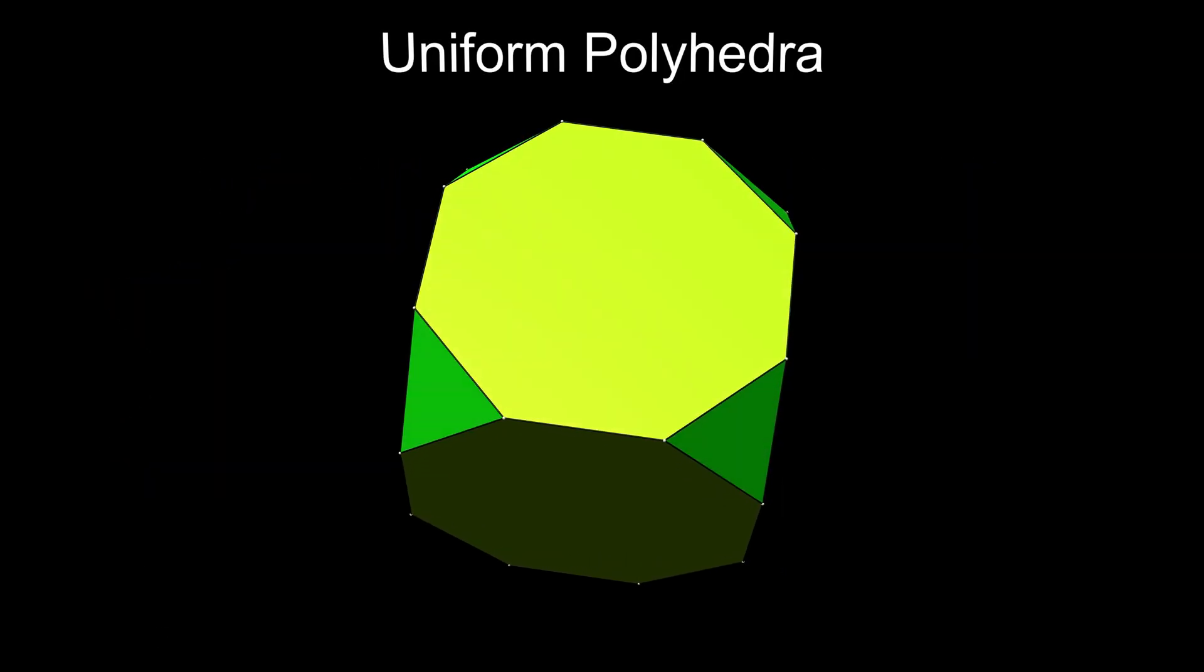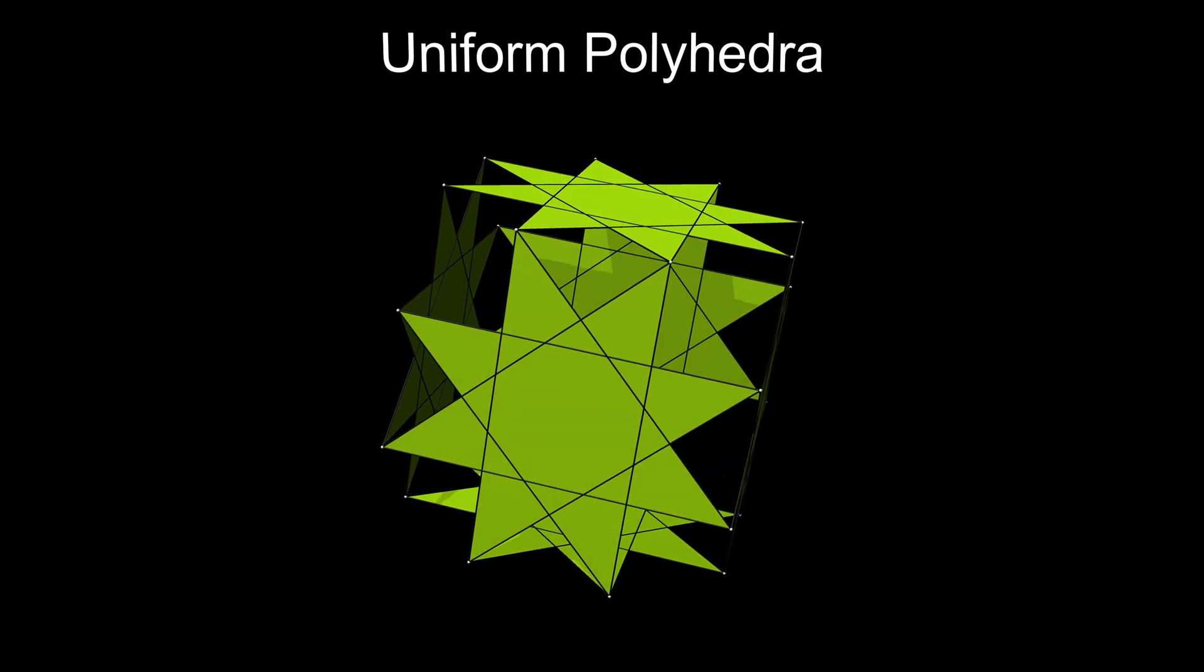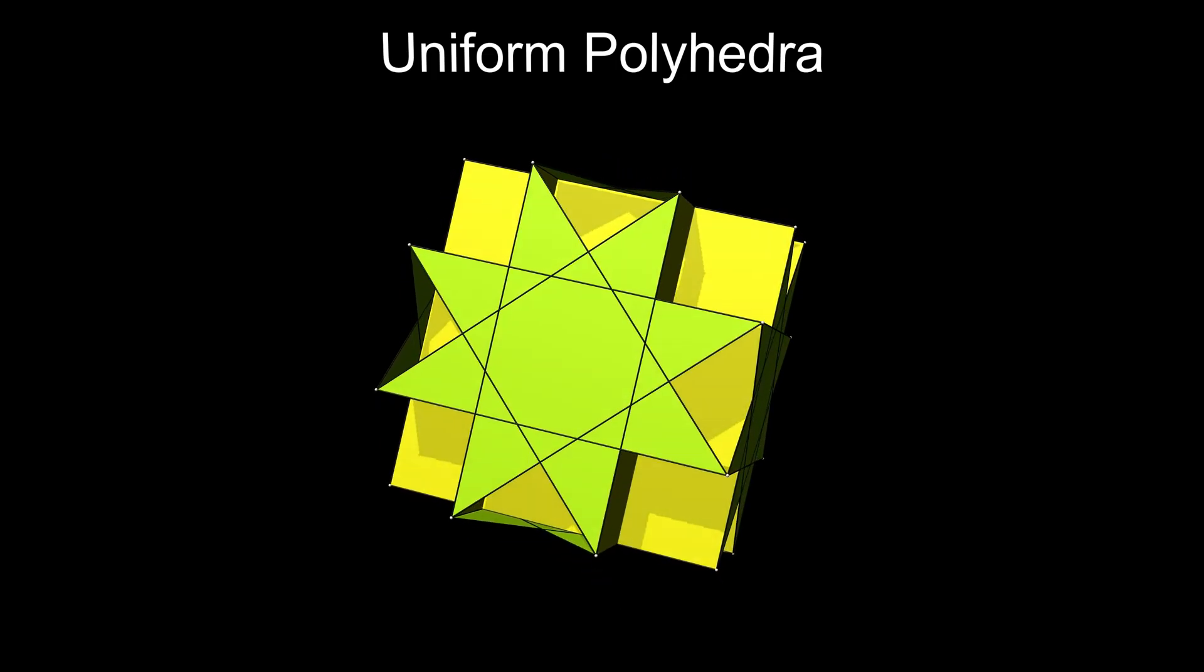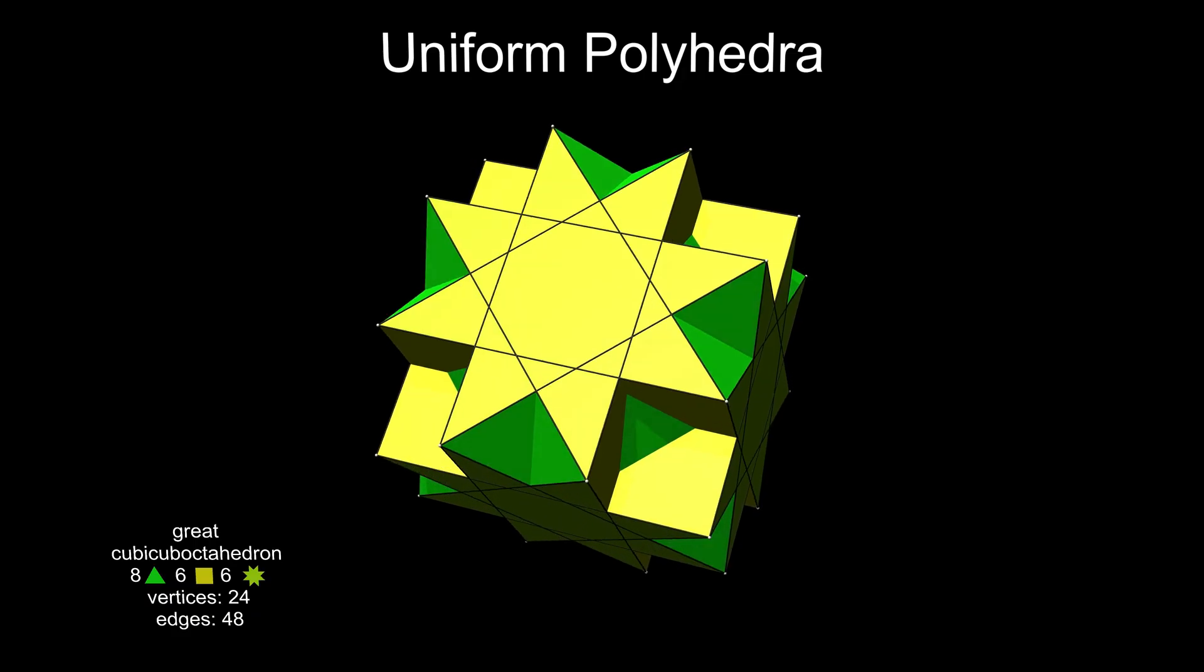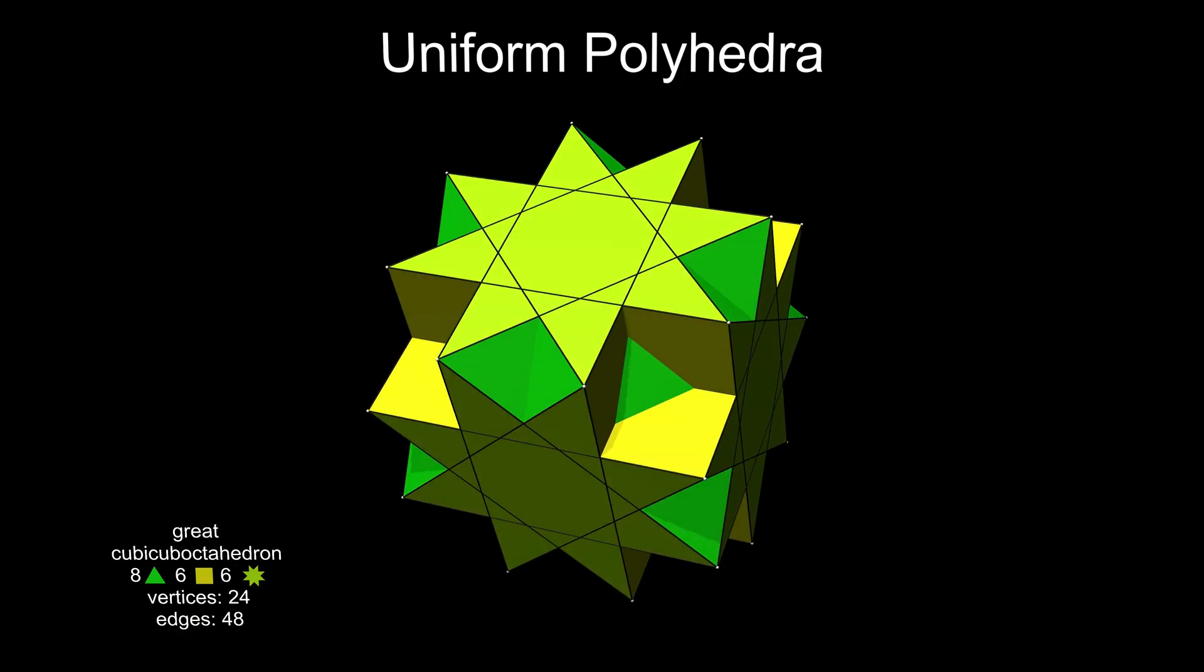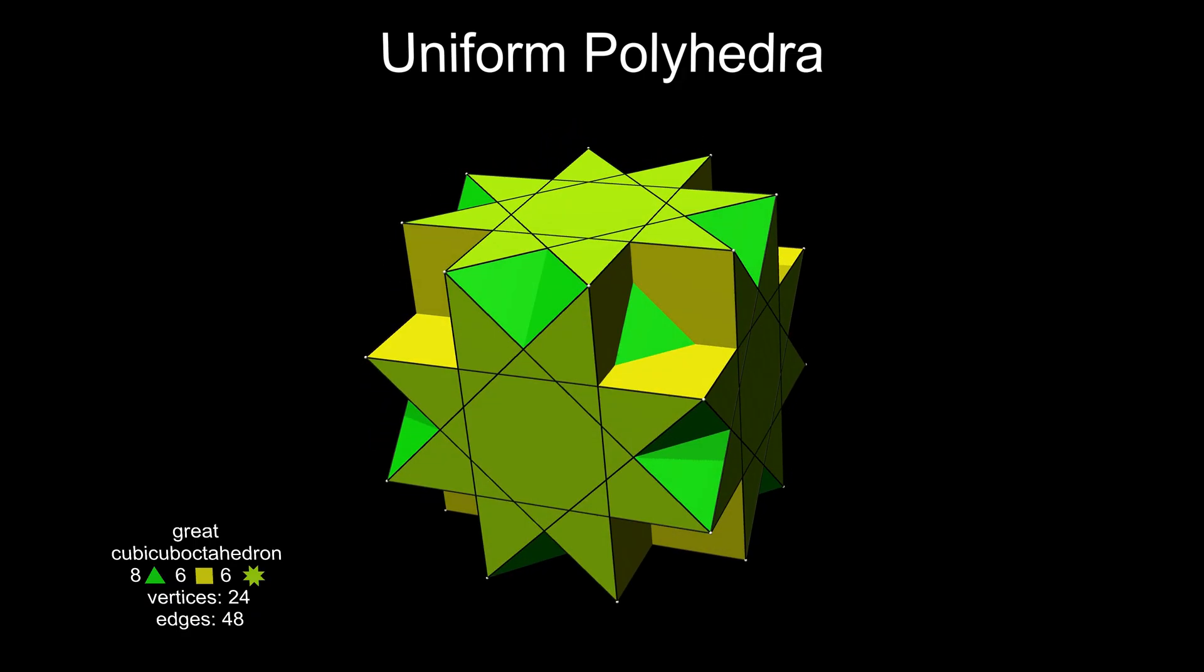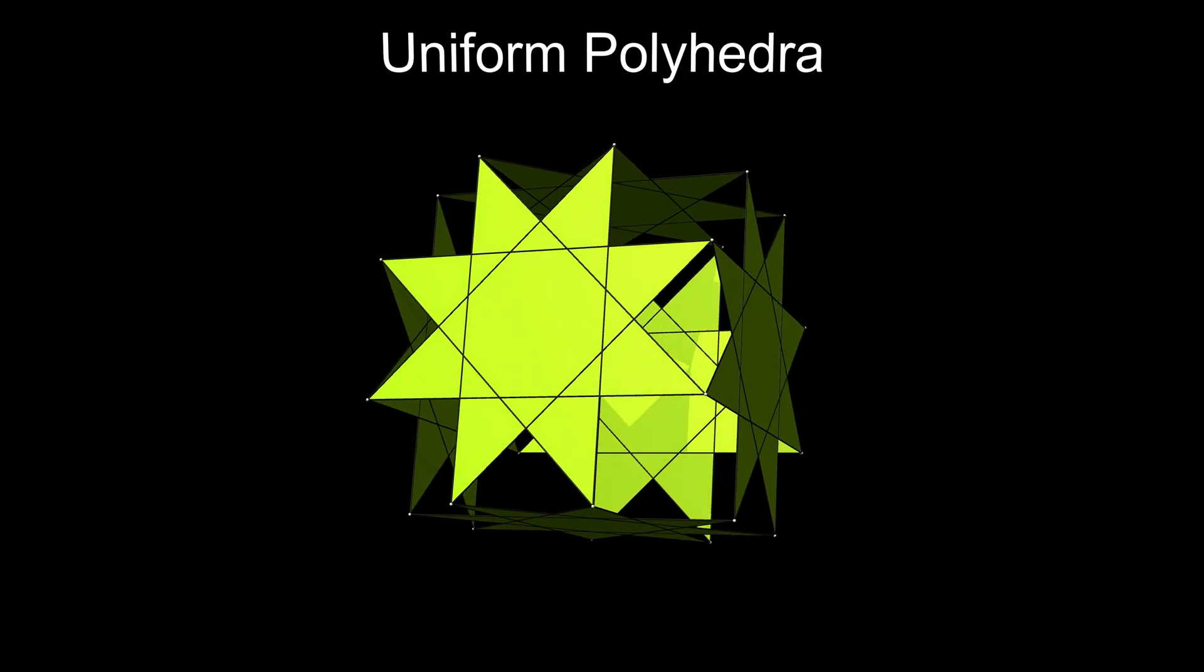Two more polyhedra can be made by joining the vertices of the truncated cube with six octograms. Adding further squares and triangles gives the great cubicuboctahedron. Alternatively, squares only can be added diagonally to make the great rhombihexahedron.